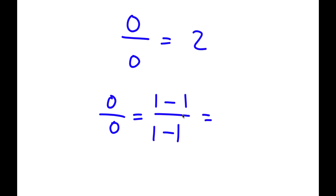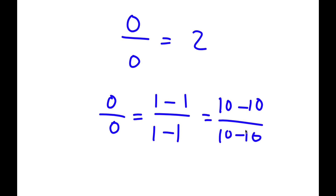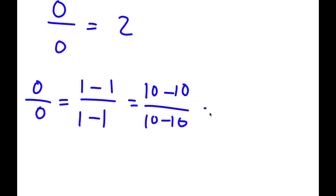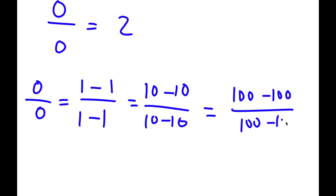And 1 minus 1 is the same thing as 10 minus 10 — all of this is equal to 0. 1 minus 1 is 0, 10 minus 10 is 0. And 10 minus 10 is the same thing as 100 minus 100.